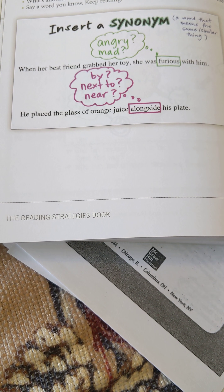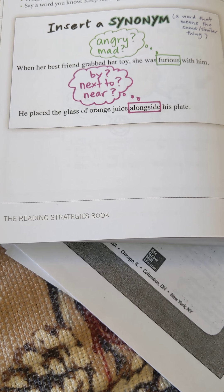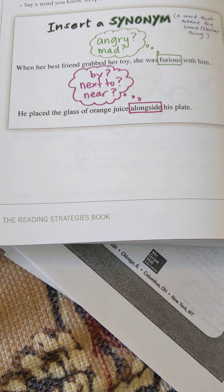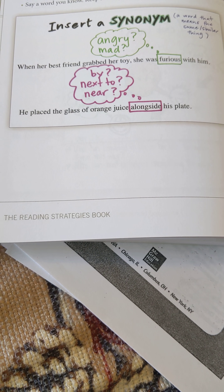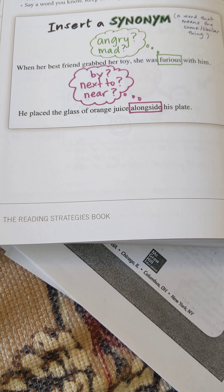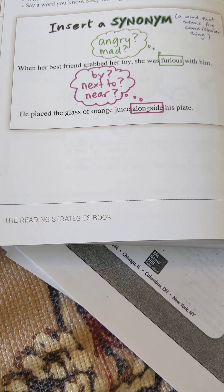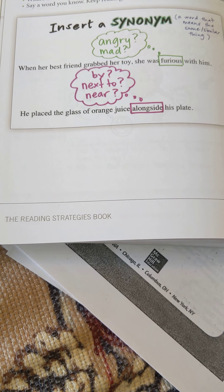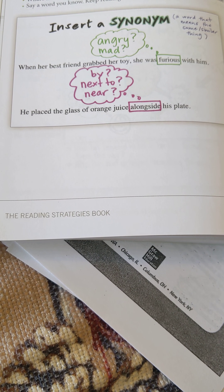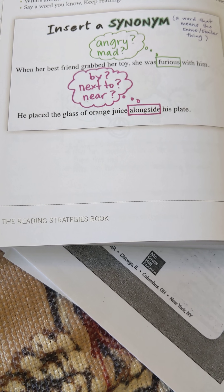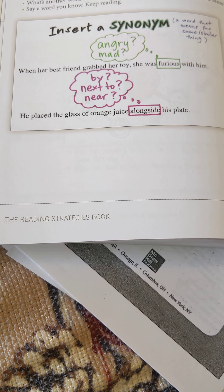That's a great question. What I like to do is look at the sentence and think about what is going on. With that top situation, her best friend grabbed her toy. In general, we're not happy when somebody takes something from us, so you can think that the mood of that sentence is a bad one — something negative. She would not be feeling happy, so in the little cloud it brainstorms: maybe that means angry or mad.